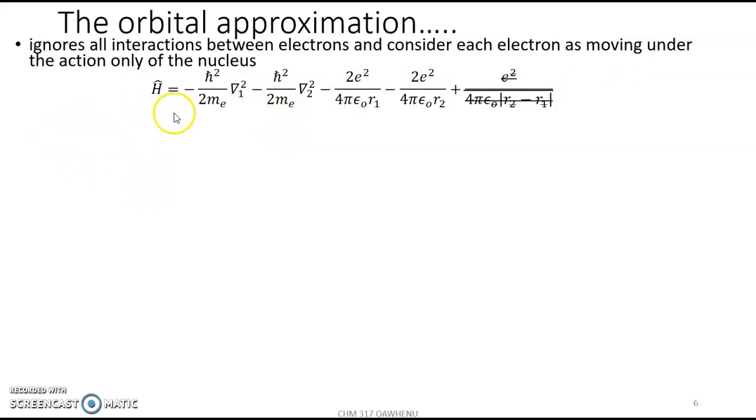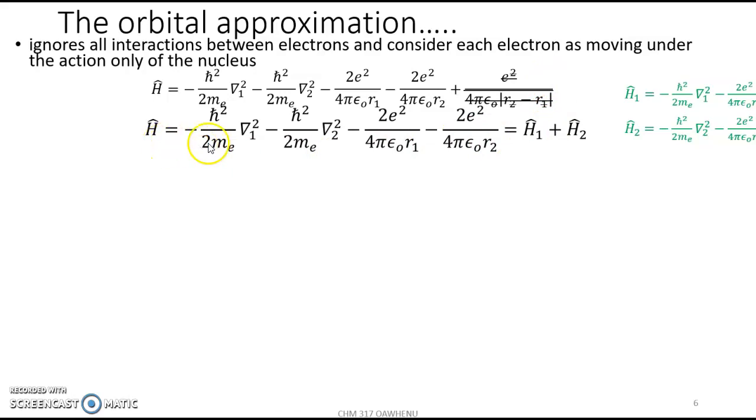What that means is that it considers the particle's kinetic energy and its potential energy of attraction to the nucleus. We have this for the first electron and this for the second electron. And then the electron-electron interaction is taken off. This simply becomes H equals the kinetic energy of one, kinetic energy of two, potential energy of one, and attraction between the nucleus and the electron.